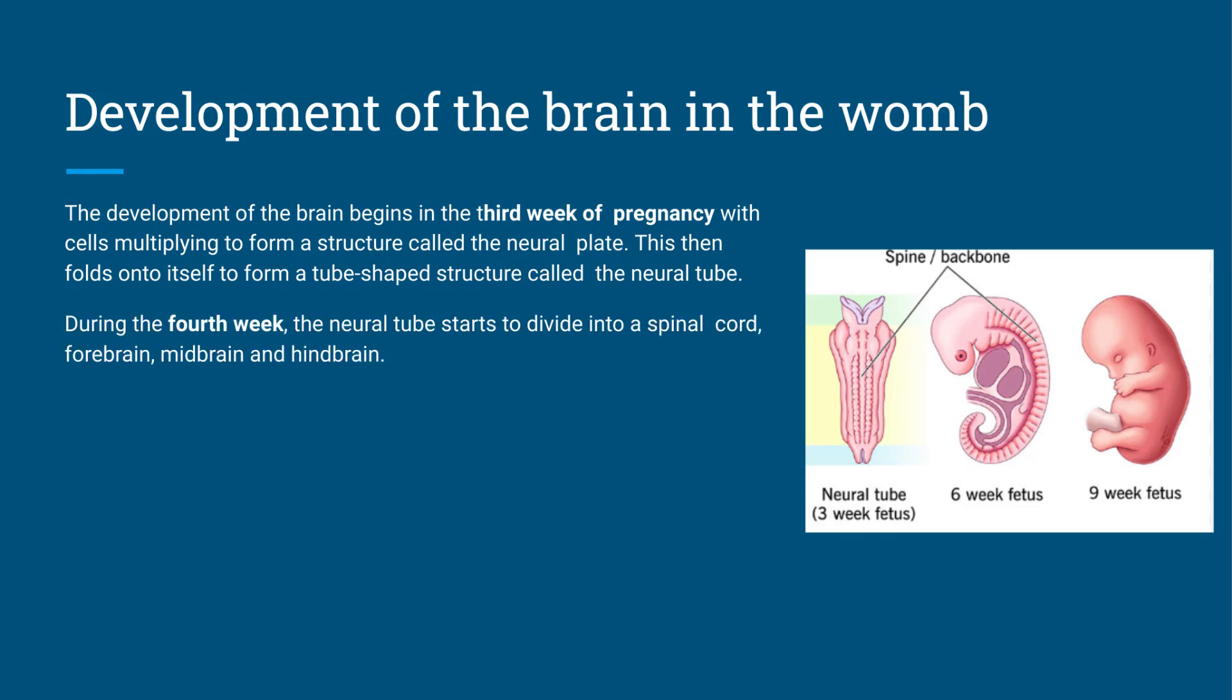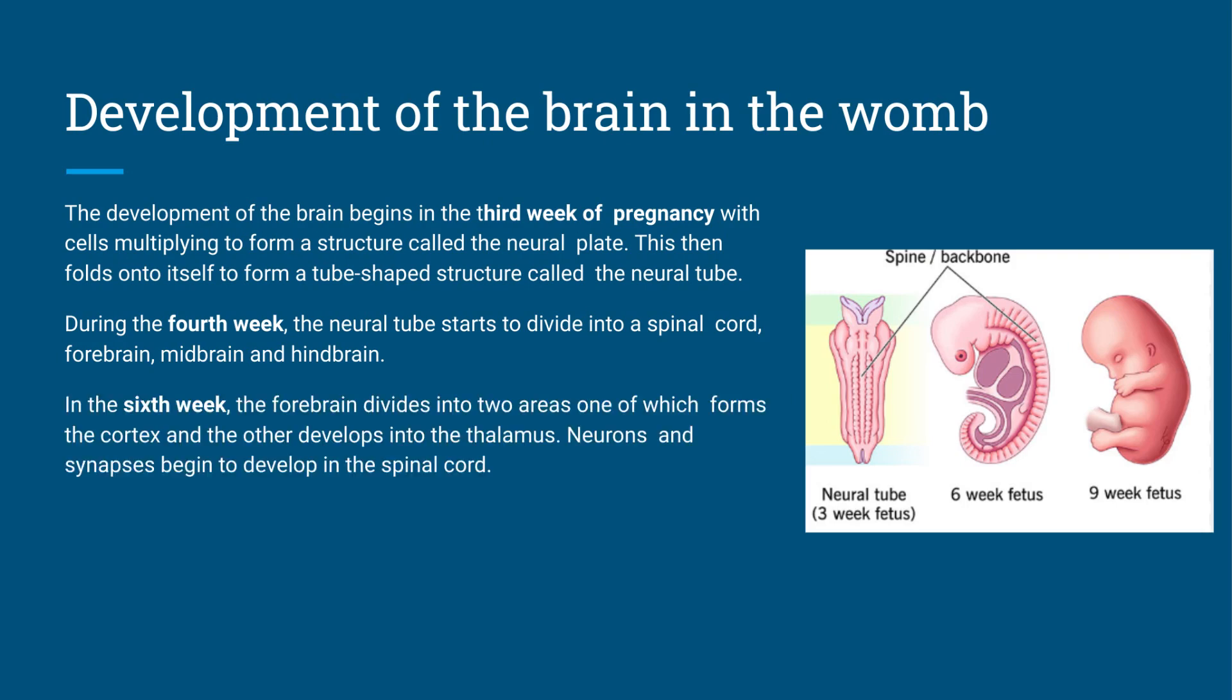Then during the fourth week, that neural tube starts to divide into our spinal cord, our forebrain, our midbrain, our hindbrain. So it starts to develop all these parts that we know as our brain and spinal cord. In the sixth week, that forebrain then divides into two areas. One's going to become the cortex, which we're going to look at later in this video, and another part develops into the thalamus. And this is where we start to get all these different neurons and synapses starting to develop in the spinal cord.